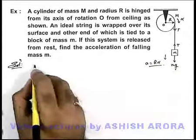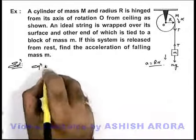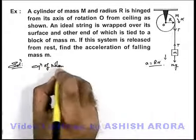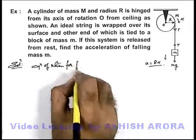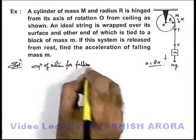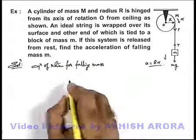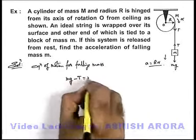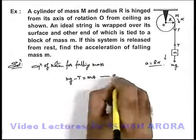If we write the equation of motion for the falling mass, we get mg - T = ma. That will be our first equation.